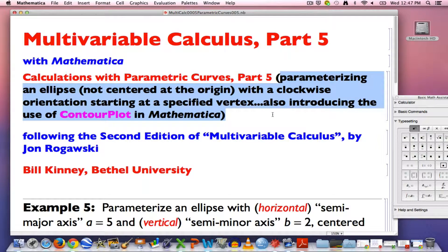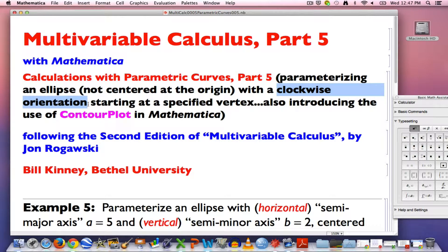What we're going to do is parametrize an ellipse. Now an ellipse is an oval shape. Usually ellipses are centered at the origin, that's the simplest kind of ellipse at least, but our ellipse is not going to be centered at the origin. Also usually when you parametrize such an ellipse, you parametrize it with a counterclockwise orientation. We are going to do a clockwise orientation. Also you usually start at the right vertex. Vertices of the ellipse are where the ellipse crosses what you might call its axis of symmetry. Usually you start at the one on the right. We are going to start at a different one.